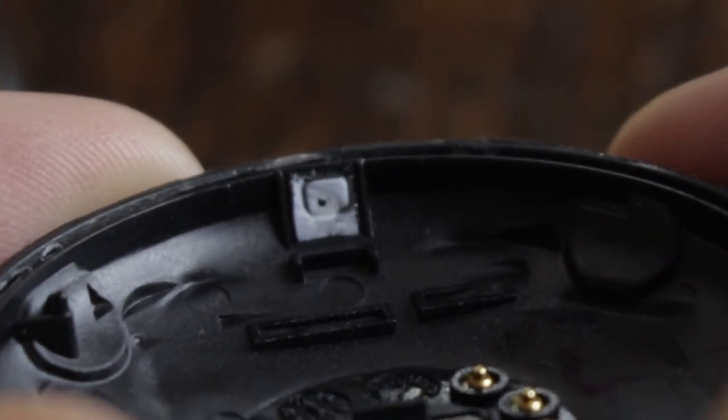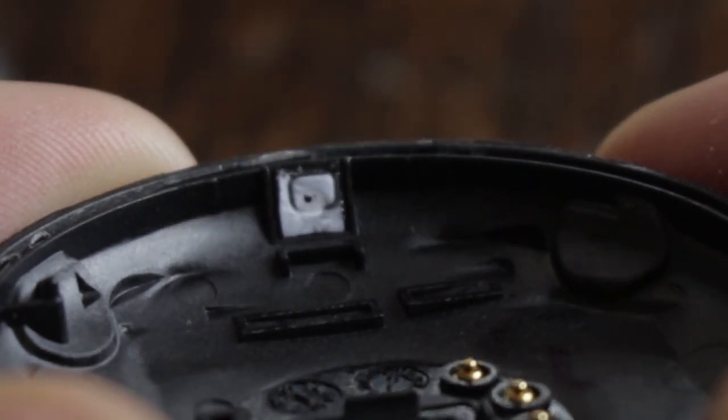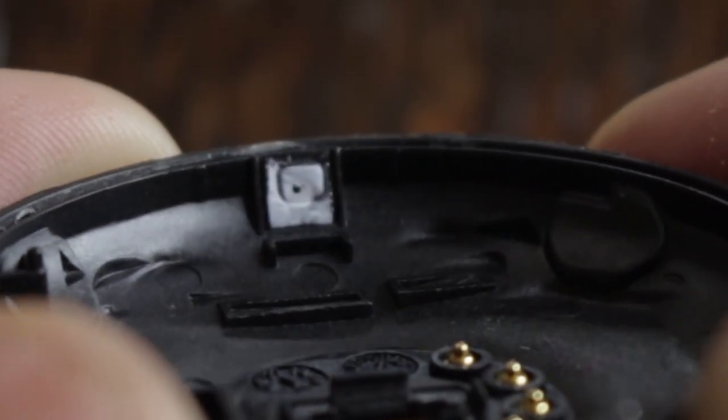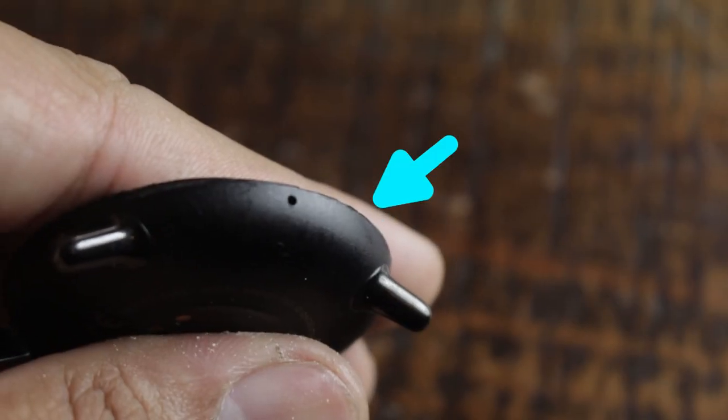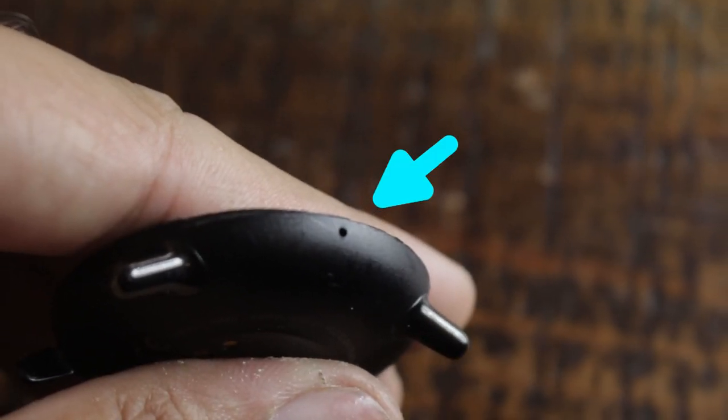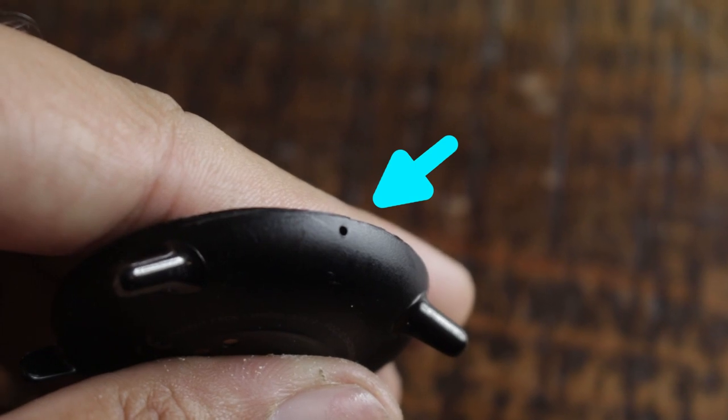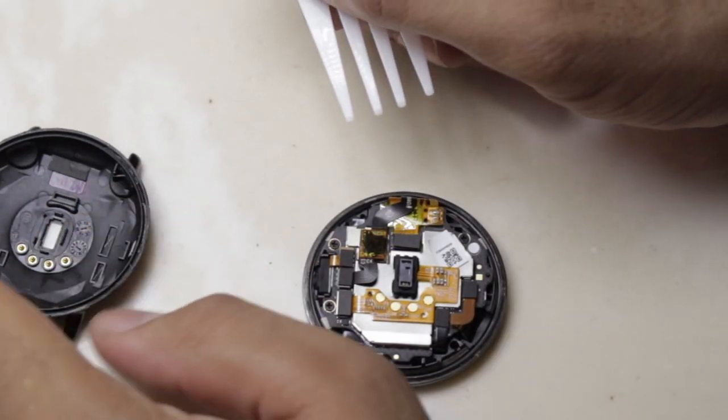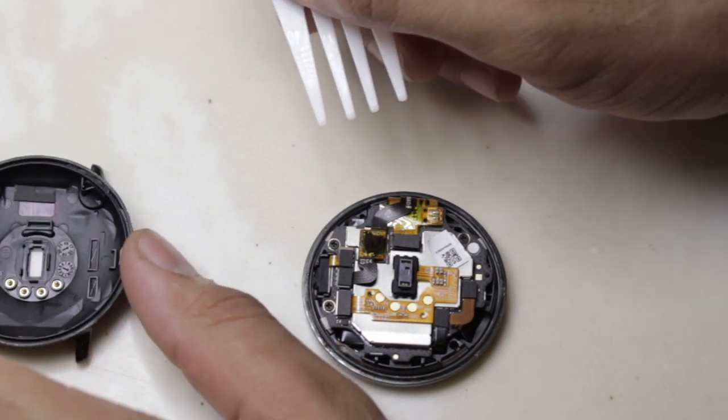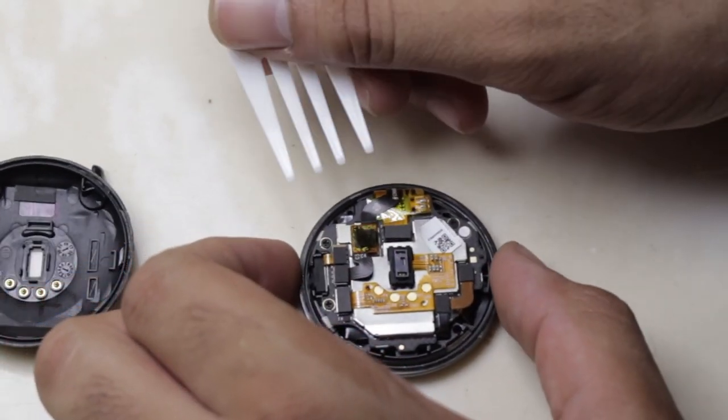So on the side of the watch there is a hole with a thin membrane on the other side. This thin membrane tends to give out. Some people have reported giving it out but for me in my case it looks like I accidentally poked a hole through it when I was trying to reset the watch when I first got it. So it's kind of an embarrassing mistake. That's why the water got in.